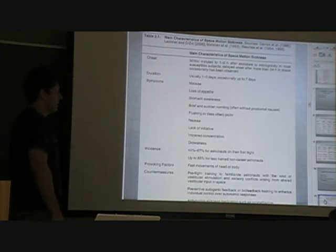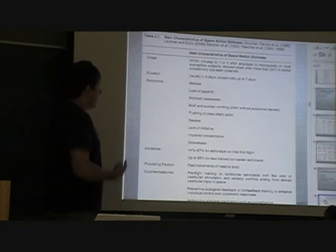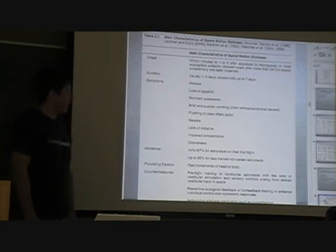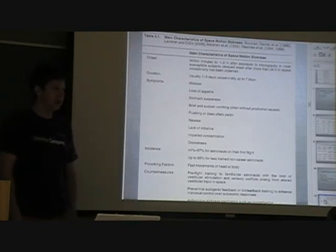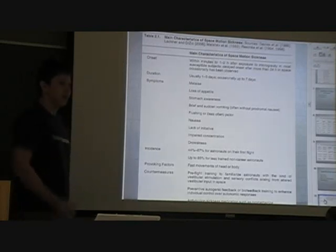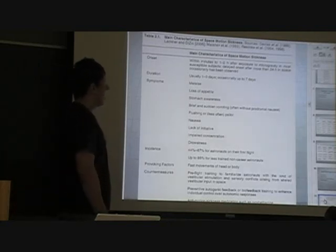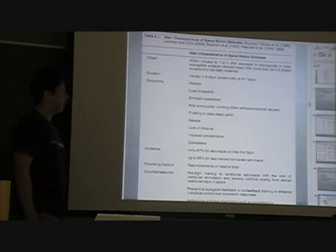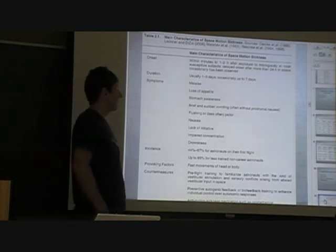So here are some of the main characteristics of space motion sickness. The onset is just one to two hours after exposure of microgravity, so it's not something that gets you immediately when you get into space, but soon thereafter. So you may get into space, oh yay, I'm fine, I don't get space sickness, and you do actually an hour later. There's also cases of late onset, more than 24 hours after you've been in space. The duration is usually one to three days, and occasionally up to seven days. Imagine being in space sickness on your first mission for seven days.